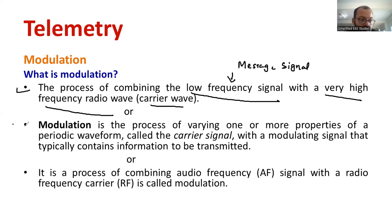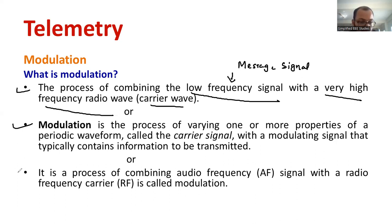The second definition: modulation is the process of varying one or more properties of a periodic waveform, called the carrier signal, with the modulating signal that typically contains the information to be transmitted. Moving on to the third definition: it is the process of combining an audio frequency signal with a radio frequency carrier, known as modulation. You can follow any type of definition — the concept is the same in all definitions.